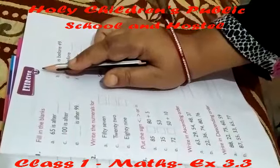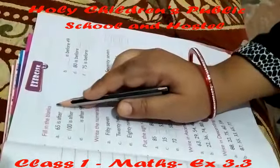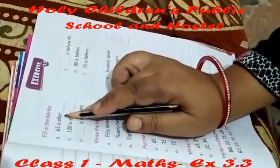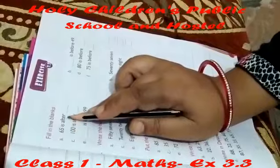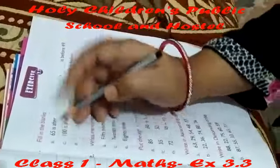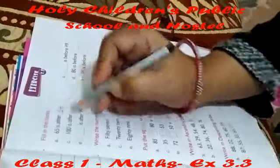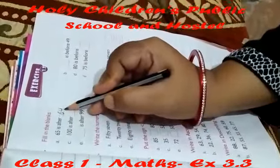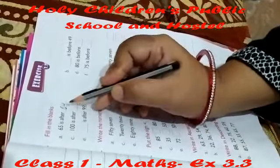Exercise 3.3. Question number 1 is filling the blanks. 65 is after which number? Which number comes before 65? 64. 65 is after 64. 65 comes after 64.